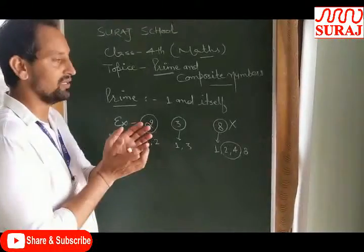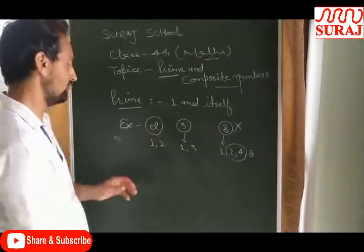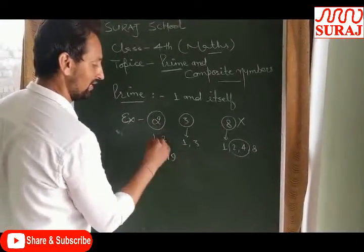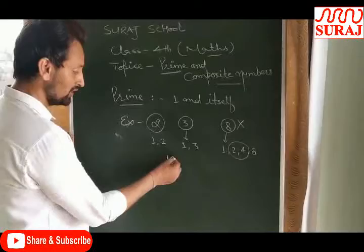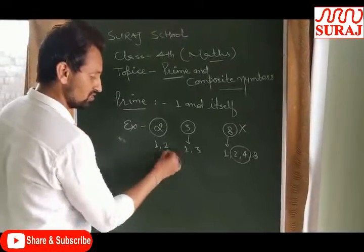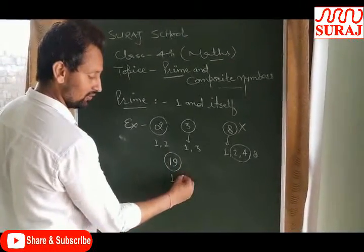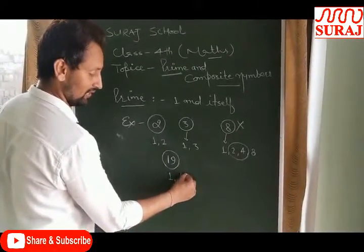Now let's look at a prime number. For example, I have written the number 19. This is only divisible by one and 19, so it is a prime number.